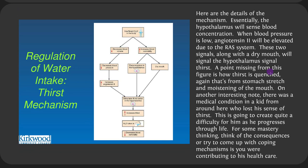The hypothalamus senses decreased blood volume and increased concentration. These signals, along with dry mouth, signal the hypothalamus to trigger thirst. Thirst is quenched by stomach stretch and moistening of the mouth. There was a medical case of a child in this area who lost his sense of thirst. He's already lost significant weight in just an intervening year because he's not drinking enough. Think about the consequences and coping mechanisms — if you've lost your sense of thirst, there are myriad potential problems. A healthcare team would need to help him find methods to compensate for his inability to sense thirst.